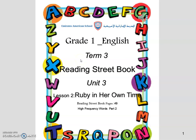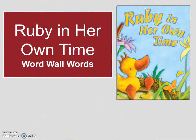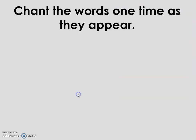Let's start. Ruby in her own time. Try the words one time as they appear.